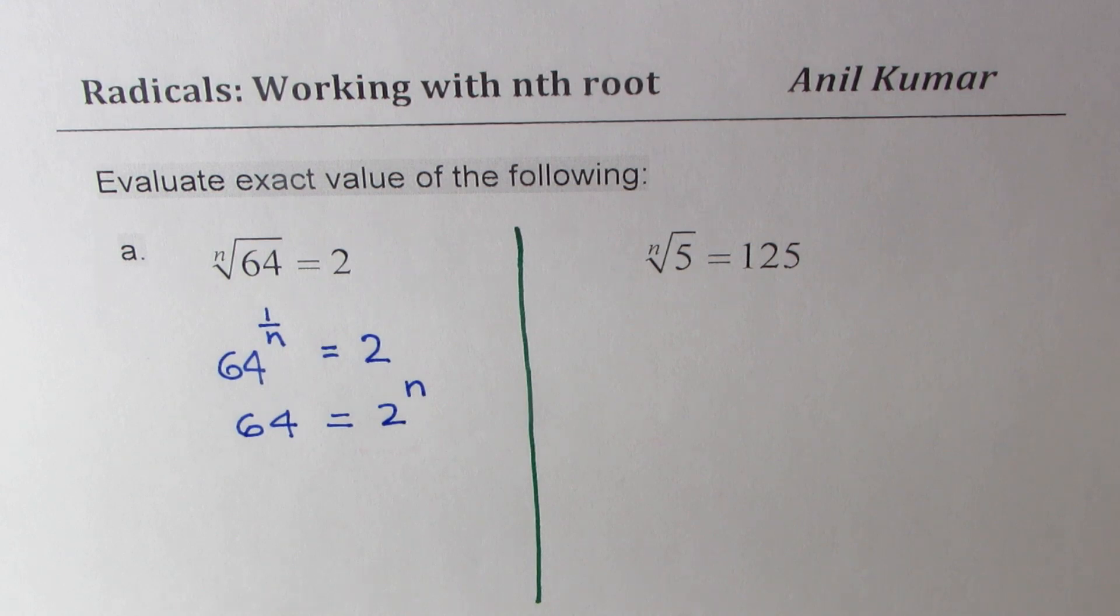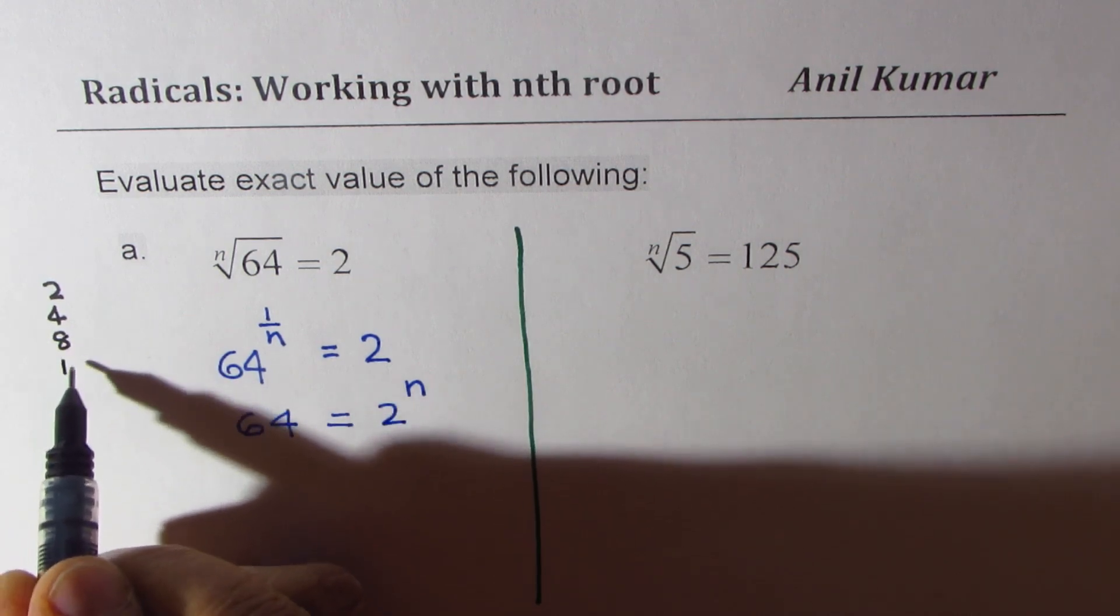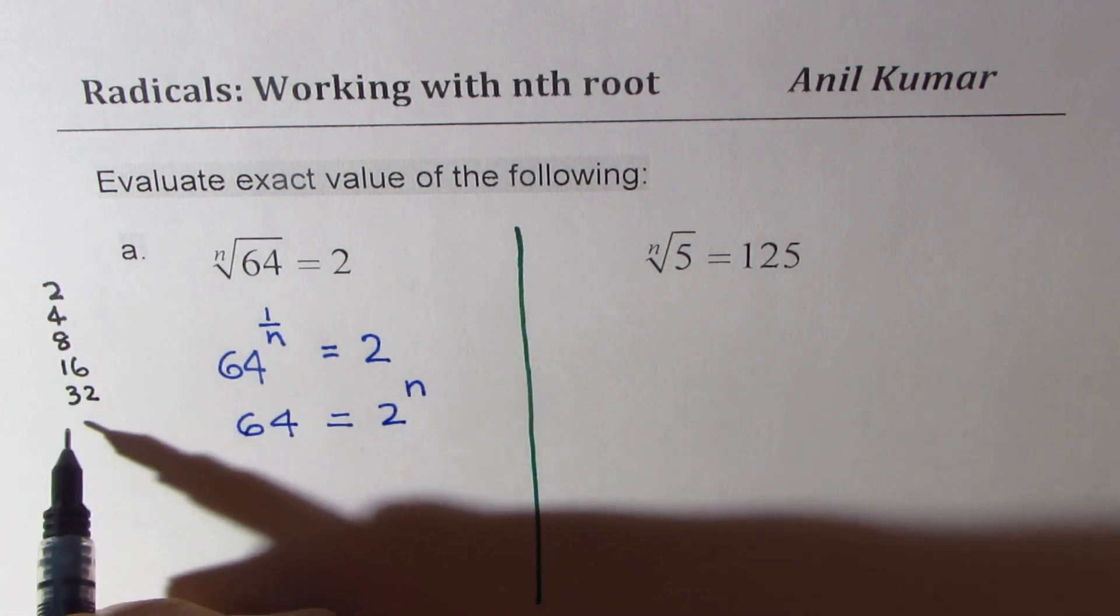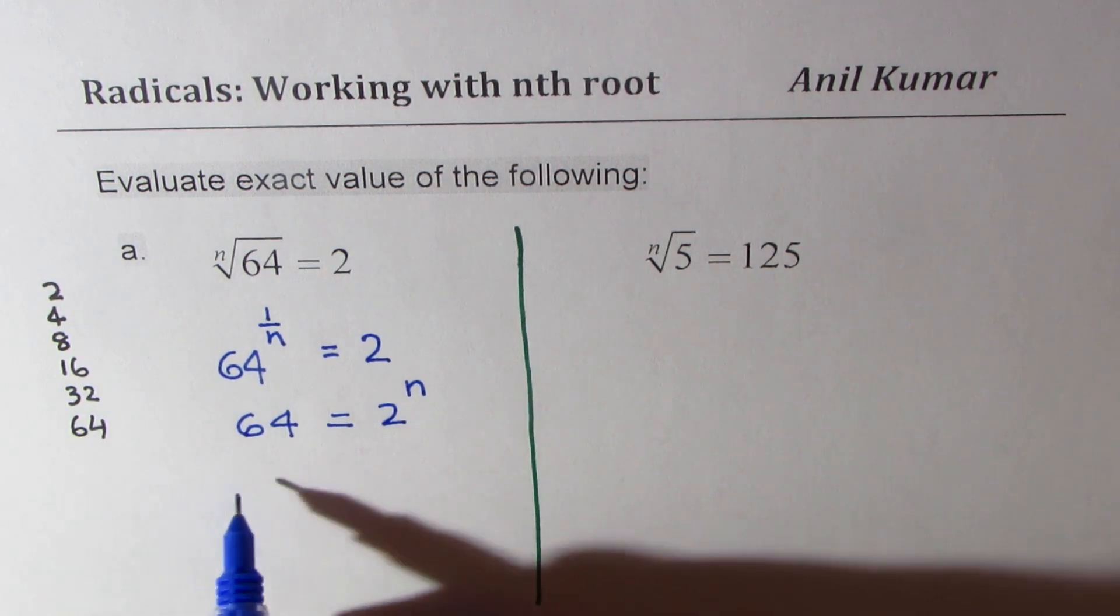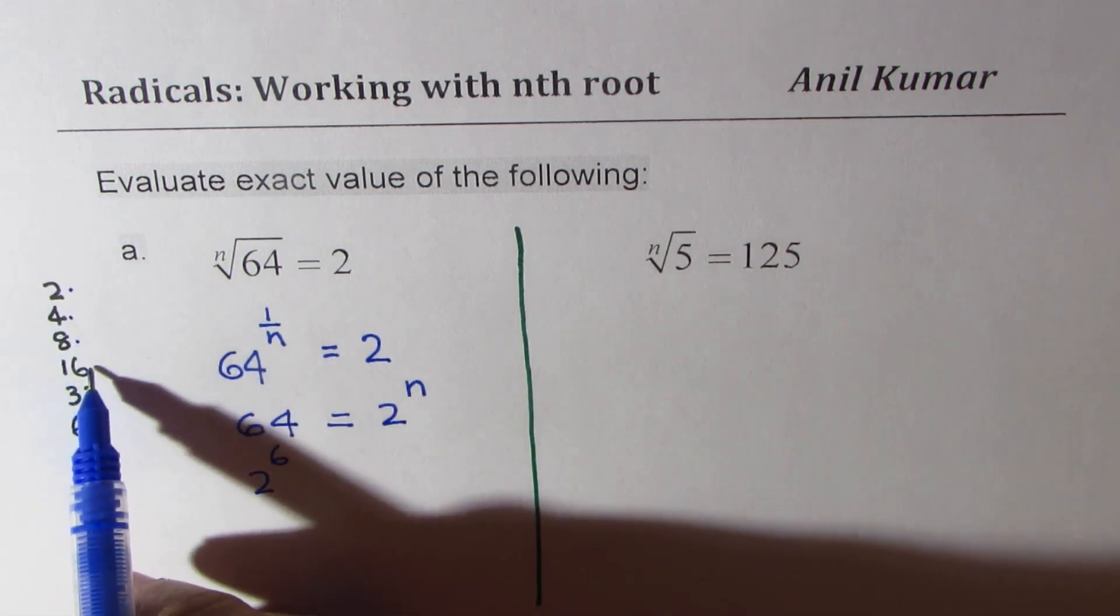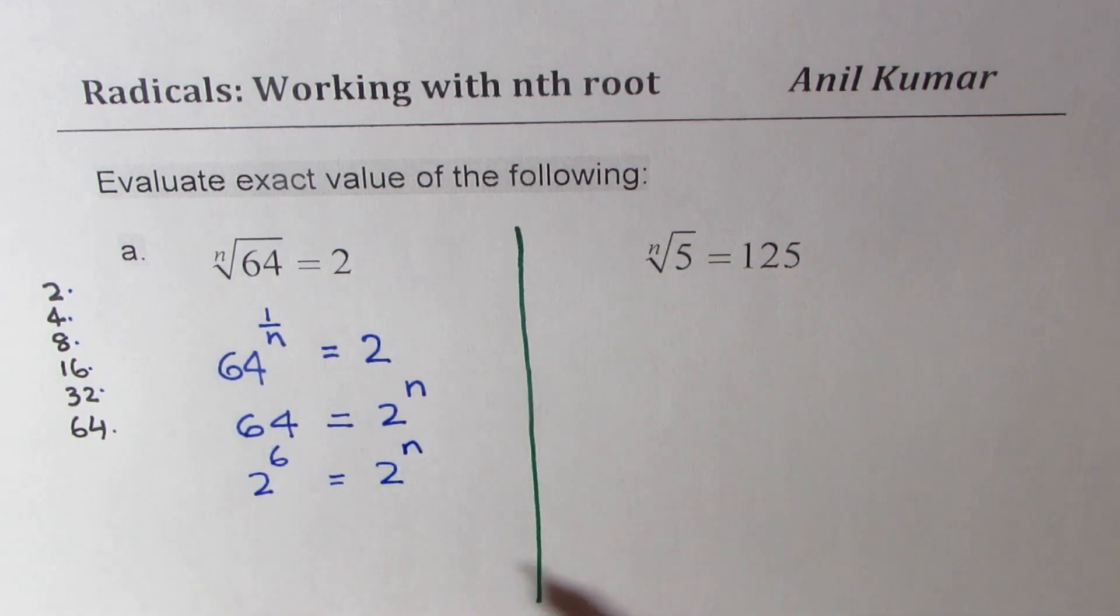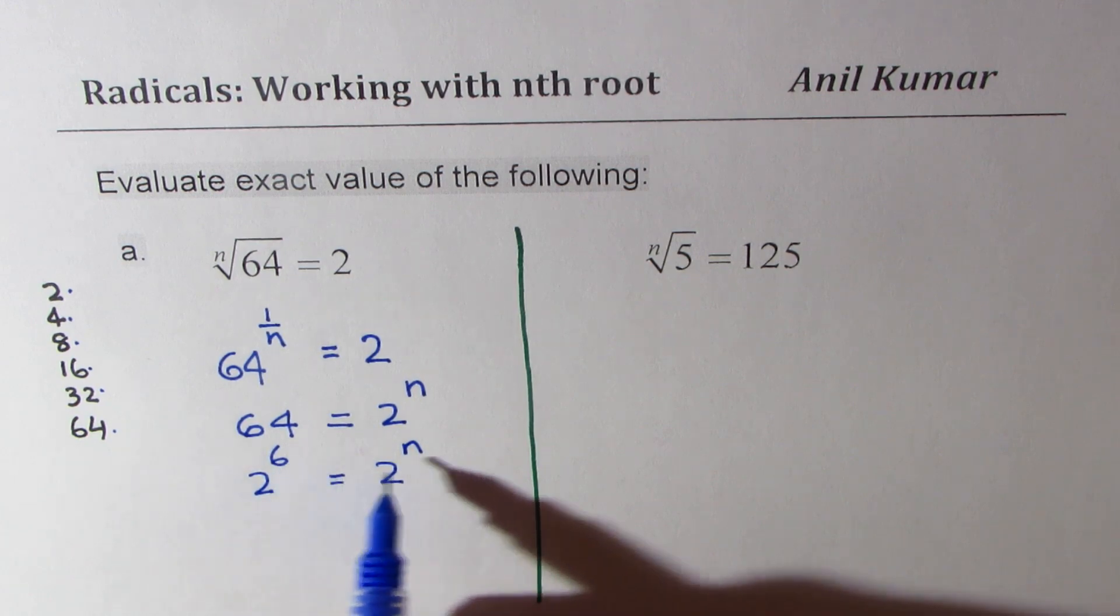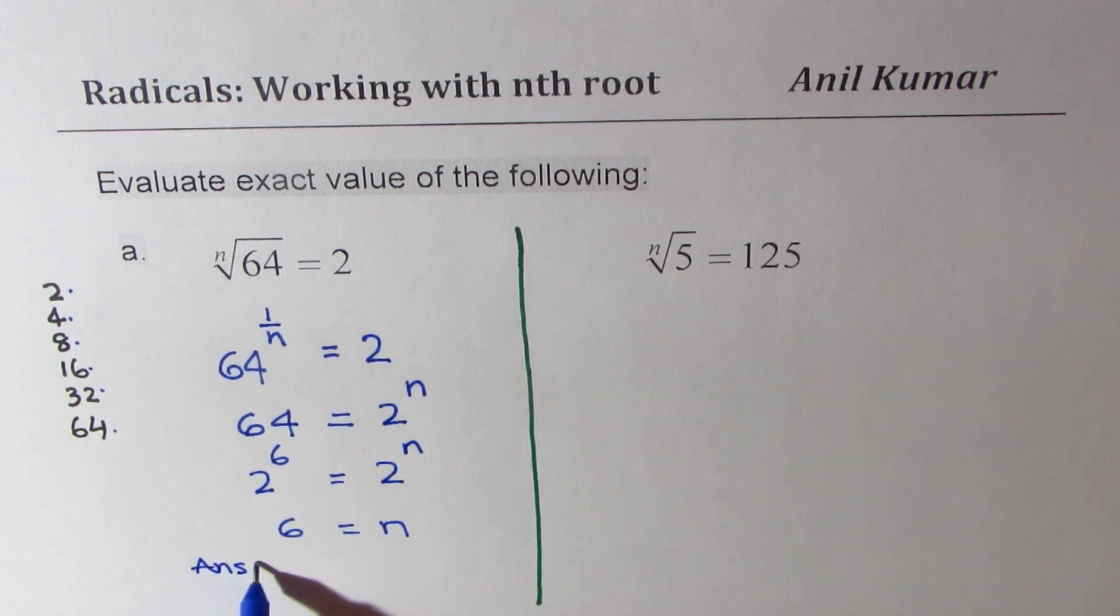So if you look into the powers of 2, that means 2, 2 times 2 is 4, times 2 is 8, then we have 16, 32, and finally we get 64. So what we see here is that 2 to the power of 6 is equal to 2 to the power of n. When the base is same, then we can say the exponents are also same. So we get 6 equals n, and therefore our answer is that the index n for this radical is 6.